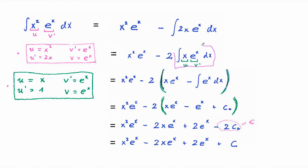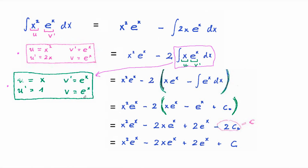Now we evaluate this remaining integral also by parts. So let u be the function x and let v prime be the function e to the x. Then u prime equals 1 and v equals e to the x. Please pause the video to go over the details.